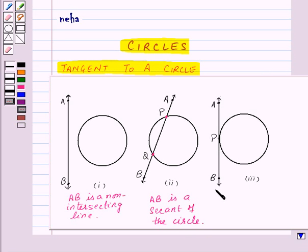And in the third case, line AB intersects with the circle only at point P, that is at one point. So here, AB is a tangent to the circle.